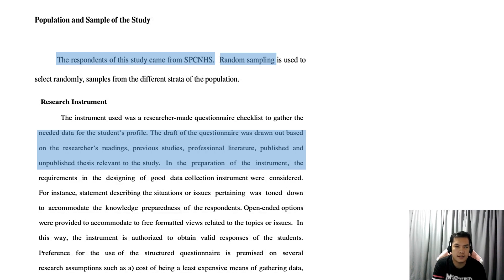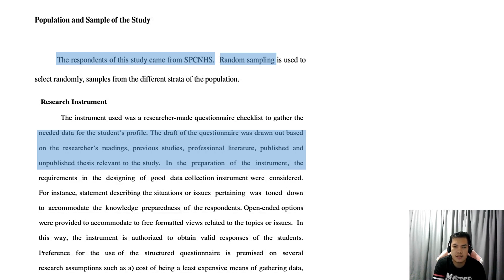We have the research instrument. It used a researcher-made questionnaire checklist to gather data for the student's profile. The draft of the questionnaire was drawn out based on the researcher's readings, previous studies, professional literature, and published and unpublished theses relevant to the study — also called the review of related literature. In the preparation of the instrument, the requirements in designing a good data collection instrument were considered. Statements describing the situation or issues pertaining were toned down to accommodate the knowledge preparedness of the respondents. Open-ended options were also provided to accommodate freely formulated views related to the topic or issues, authorizing the instrument to obtain valid responses from the students.